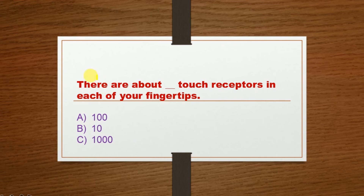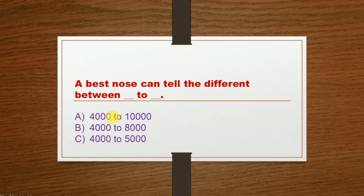Next question: There are about dash touch receptors in each of your fingertips. Option A: 100, Option B: 10, Option C: 1000. The correct option is Option A: 100.